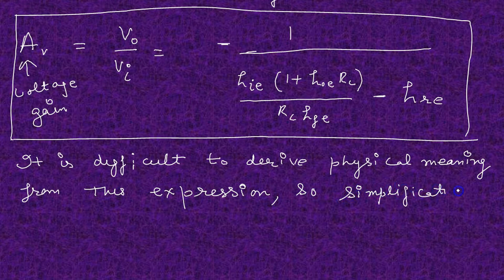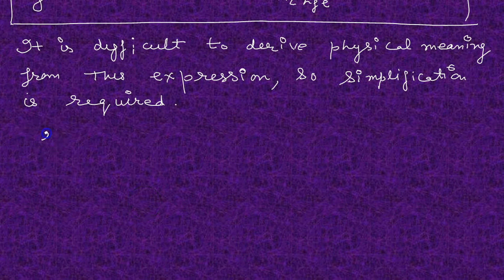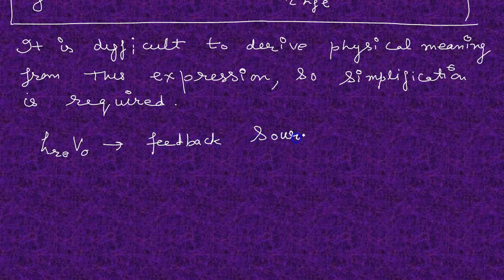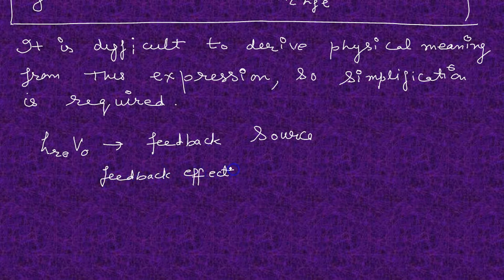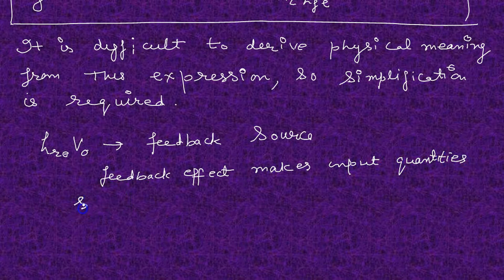So we have to simplify the expression using some approximations. Firstly, HRE ≈ 0, because it is at the input port. But this is a feedback source because of the output voltage — some voltage is coming from the output to the input. This feedback effect makes the input quantity slightly dependent on the output.